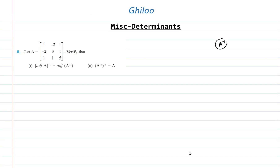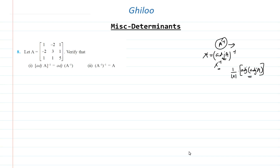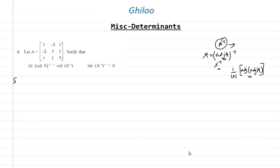First of all I'll be calculating A inverse. Before finding A inverse, obviously I'll be finding adjoint of A. To find adjoint of A whole inverse, I'll assume adjoint of A to be X, so adjoint of A whole inverse means I need to find X inverse — that means one by determinant of X times adjoint of X. But X is adjoint of A, so I need to find adjoint of adjoint of A. That is my target. For adjoint of A inverse, since I'll already have A inverse, I can find its adjoint directly, and hence I'll show that both are equal.